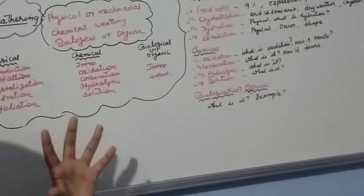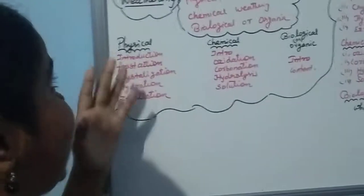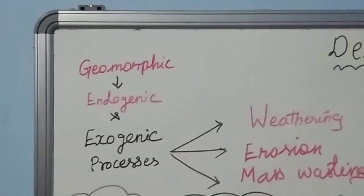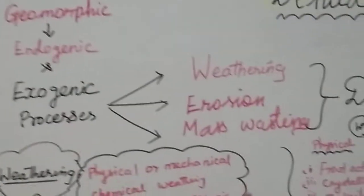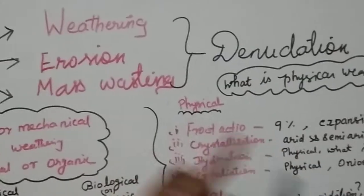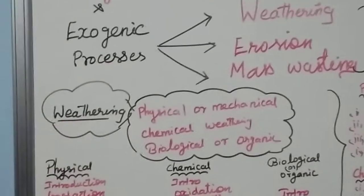Hello everyone, this is Swati. Today we are going to see a topic on denudation. This comes under the geomorphic process, which has two forces: endogenic and exogenic. We have seen the endogenic process in the previous video. We will be seeing the exogenic process, which has three types — weathering, erosion, and mass wasting — which together cause denudation. In this video we'll be seeing about weathering.